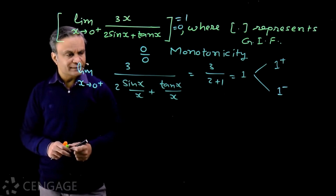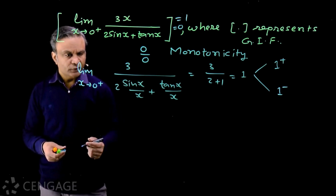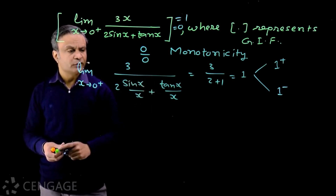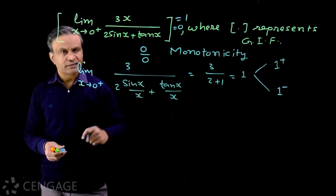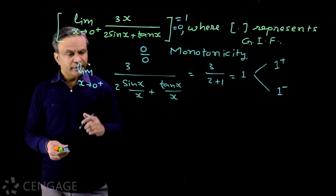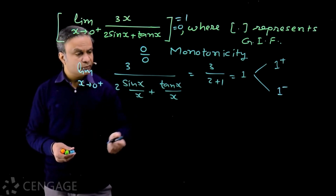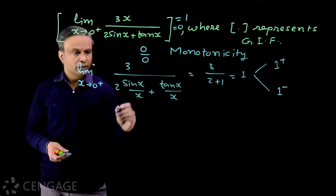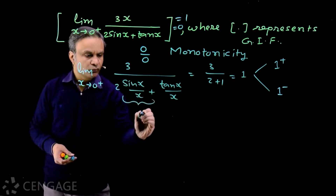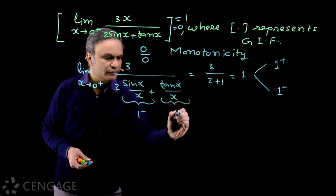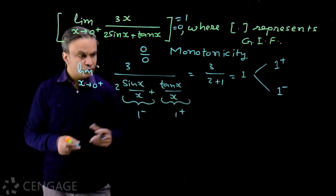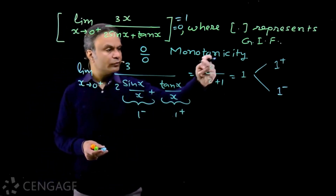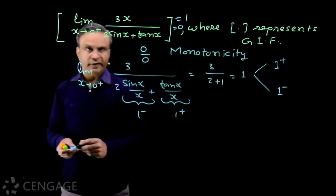The reason is: limit x tends to 0+ of sinx/x is 1, but this value is slightly less than 1 — it is 1−. And limit x tends to 0+ of 10x/x is 1, but this value is slightly more than 1 — it is 1+. So the denominator (2sinx/x + 10x/x) is either 3+ or 3−, meaning the overall value will be either 1+ or 1−.